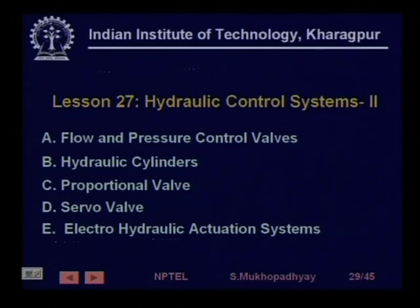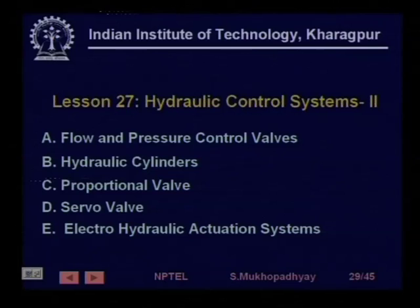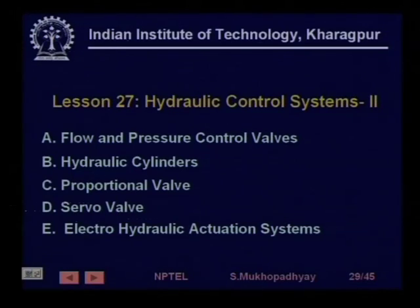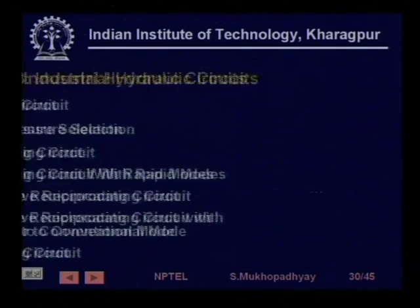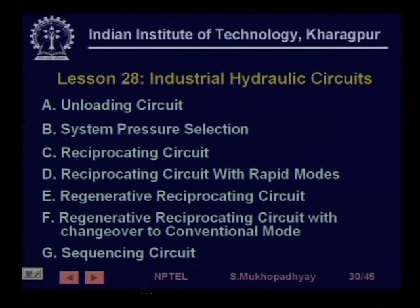In the next lesson we continued and took a look at flow and pressure control valves, hydraulic cylinders, and then two kinds of valves used very much in controls — the proportional valve and the servo valve for analog flow control — and finally we took a look at an electro-hydraulic actuation system. In lesson 28 we took a look at various typical industrial hydraulic circuits and saw how these techniques can be applied for industrial purposes.